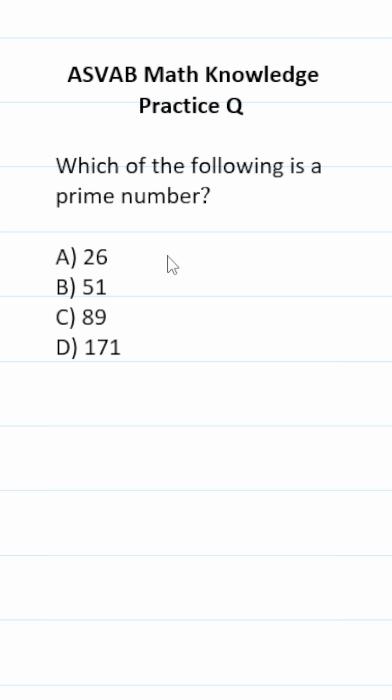This is a math knowledge practice test question. It says which of the following is a prime number? A number is considered prime if it's only divisible by one and itself. In other words, if it's divisible by something like two or three, then it's not prime. Thankfully, two and three have divisibility rules we can apply to these answer choices to figure out which of them is prime.